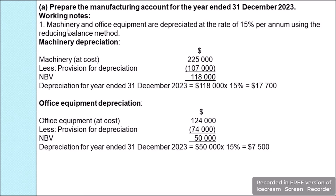We will start with our working notes. Machinery and office equipment are depreciated at 15% per annum using the reducing balance method. Under this method, depreciation is calculated on the net book value. The cost of machinery was $225,000, less provision for depreciation of $107,000, giving a net book value of $118,000. Applying 15% gives depreciation of $17,700 for the year ended 31 December 2023.